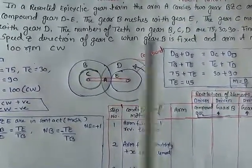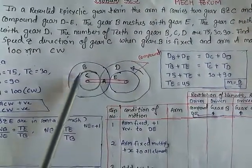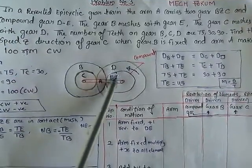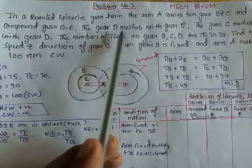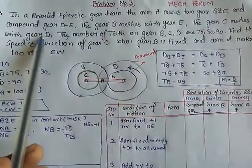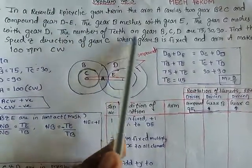In an epicyclic gear train, the arm A carries two gears B and C. This is the arm A which carries two gears B and C, and the compound gear DE. This is the compound gear DE. The gear B meshes with E, B meshes with E, C meshes with D.